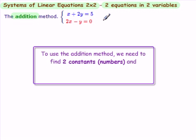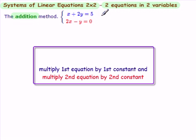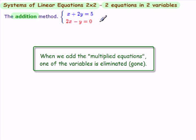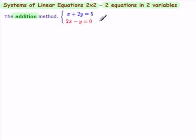What is the idea of the addition method? To find two constants. We're going to multiply the first equation by the first constant, the second equation by the second constant, so that when we add the two equations, we have eliminated one of the variables.